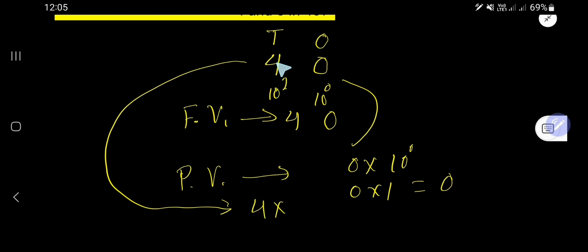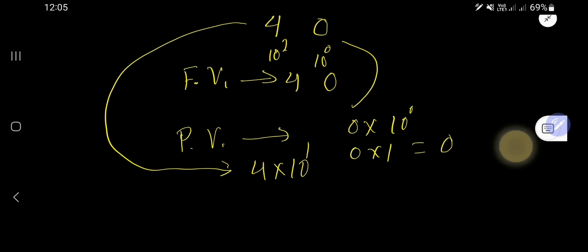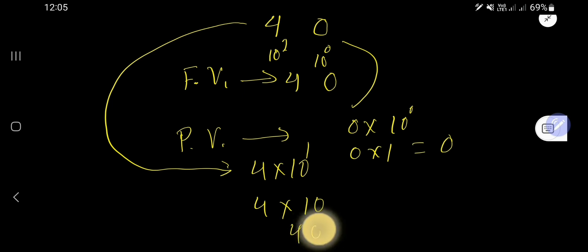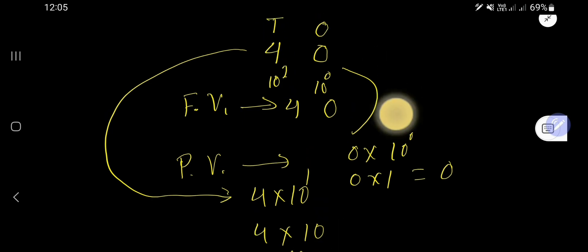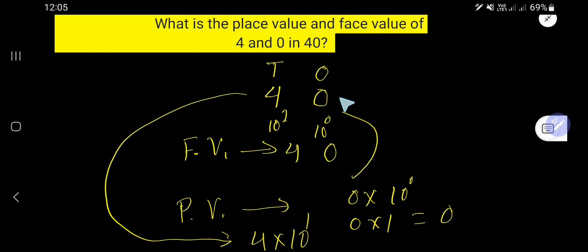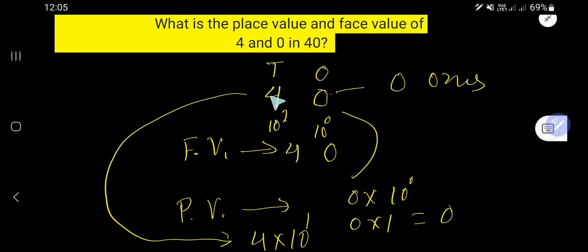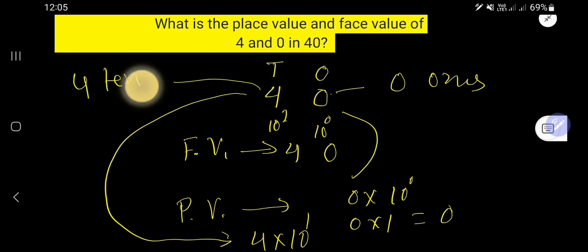The position of 4 is 10 to the power 1. 10 to the power 1 means after 1 you will have one zero, that is 10. So the place value of 4 is 4 times 10, which equals 40. In summary: the place value of 0 is 0, and the place value of 4 is 40.